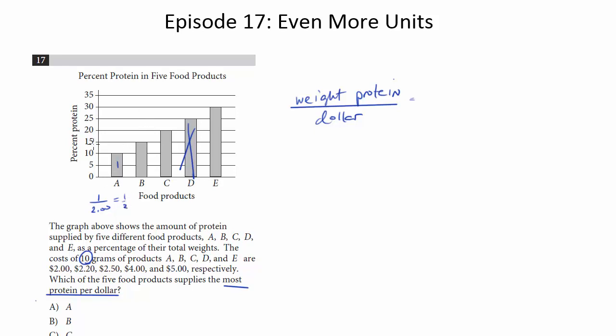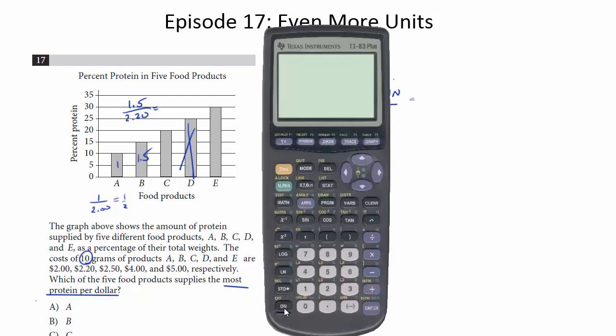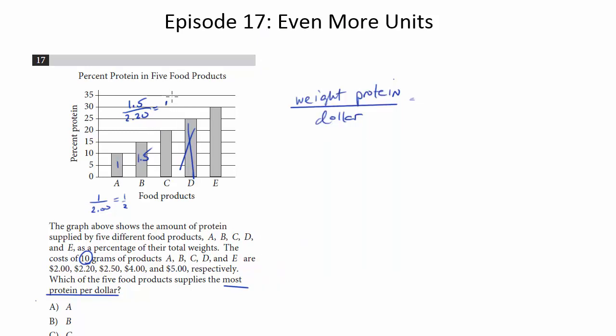For B, it's 15% protein out of 10. So that's going to be 1.5 grams. So now we're going to divide 1.5 by 220. I think that's going to be higher. But let's see what the calculator says. 1.5 divided by 220. Yep, 0.682. So that is higher. So we can get rid of A.